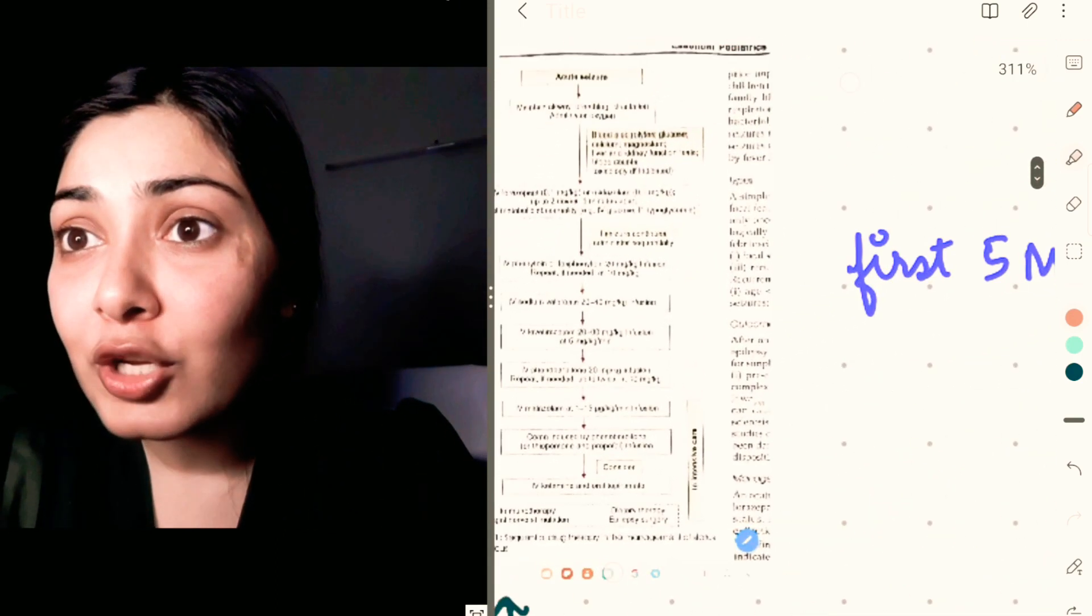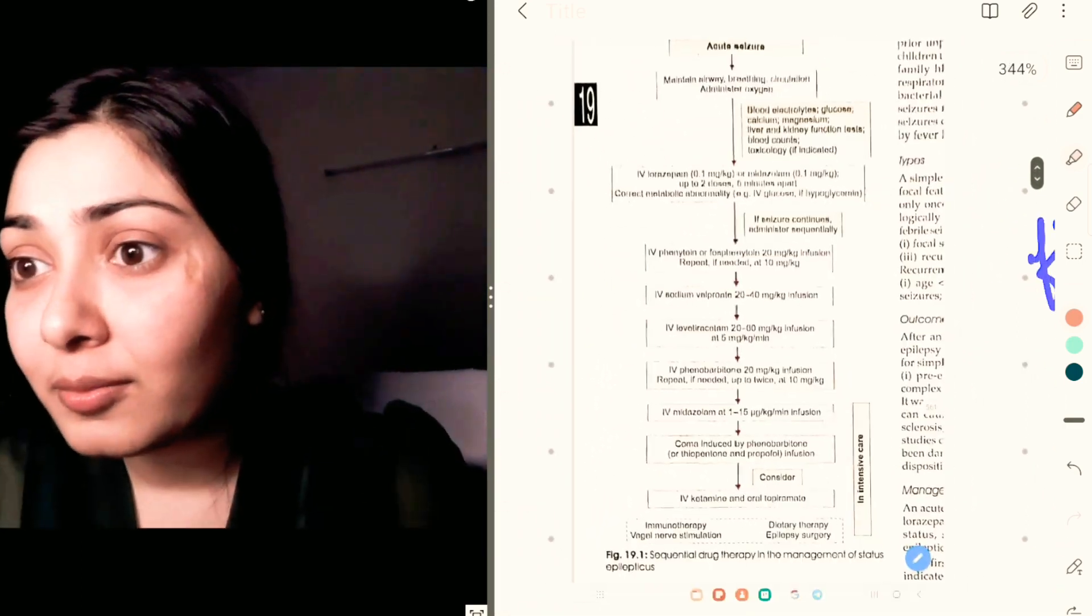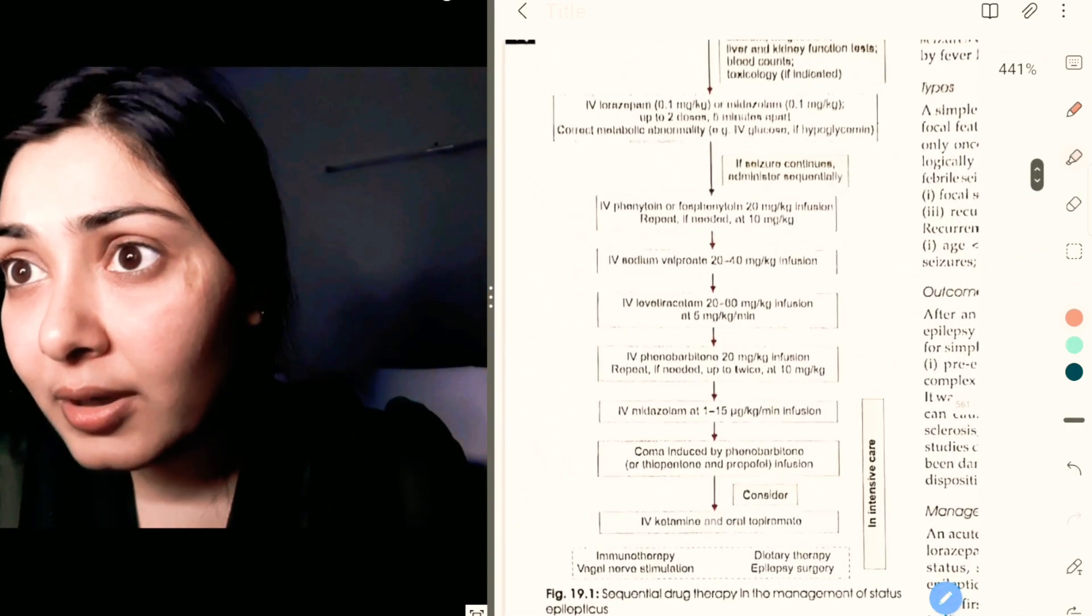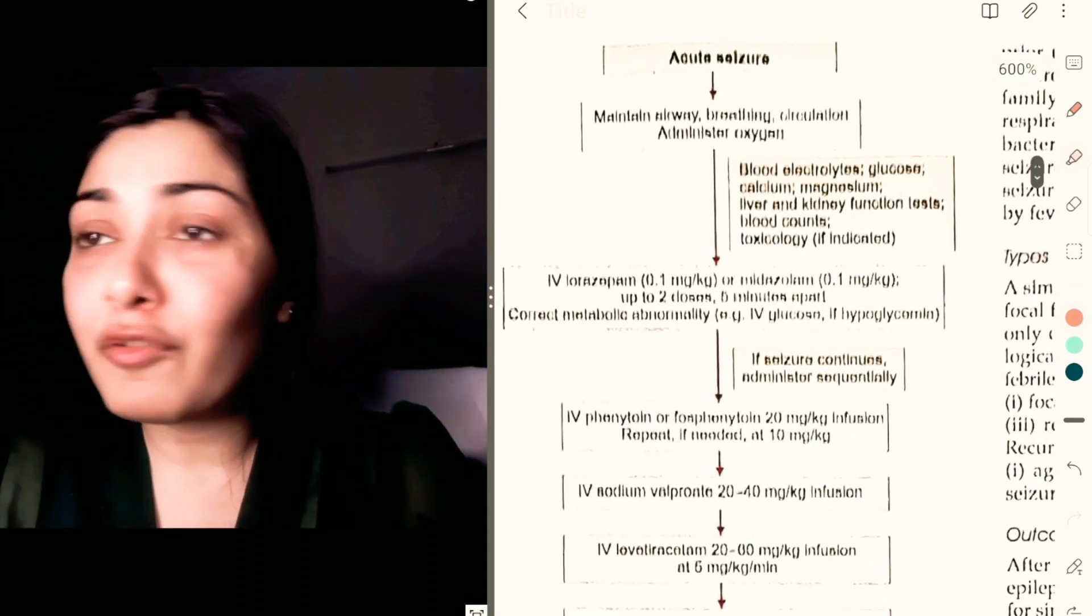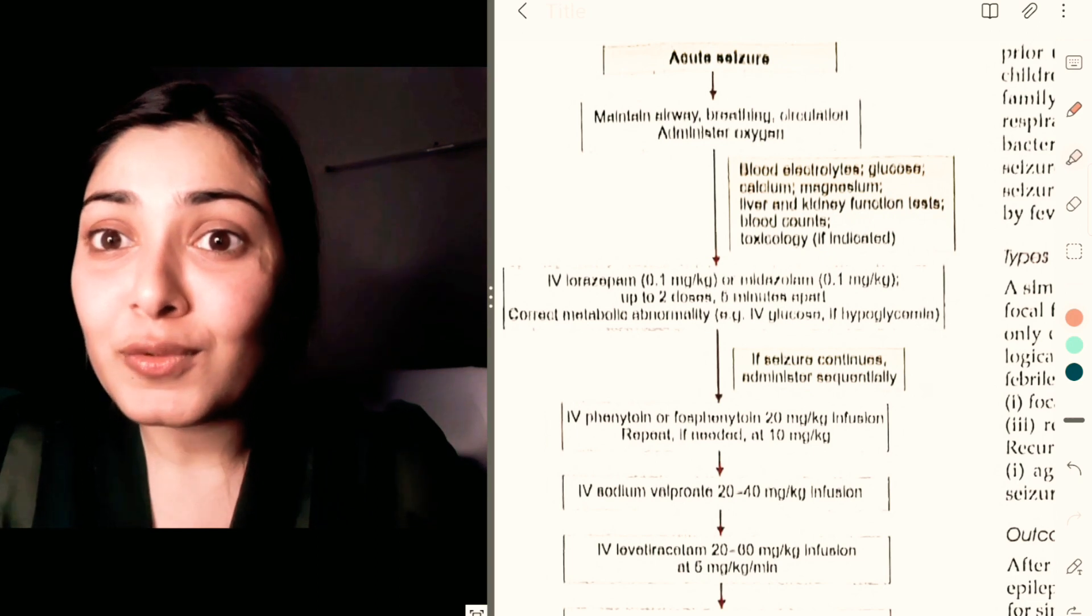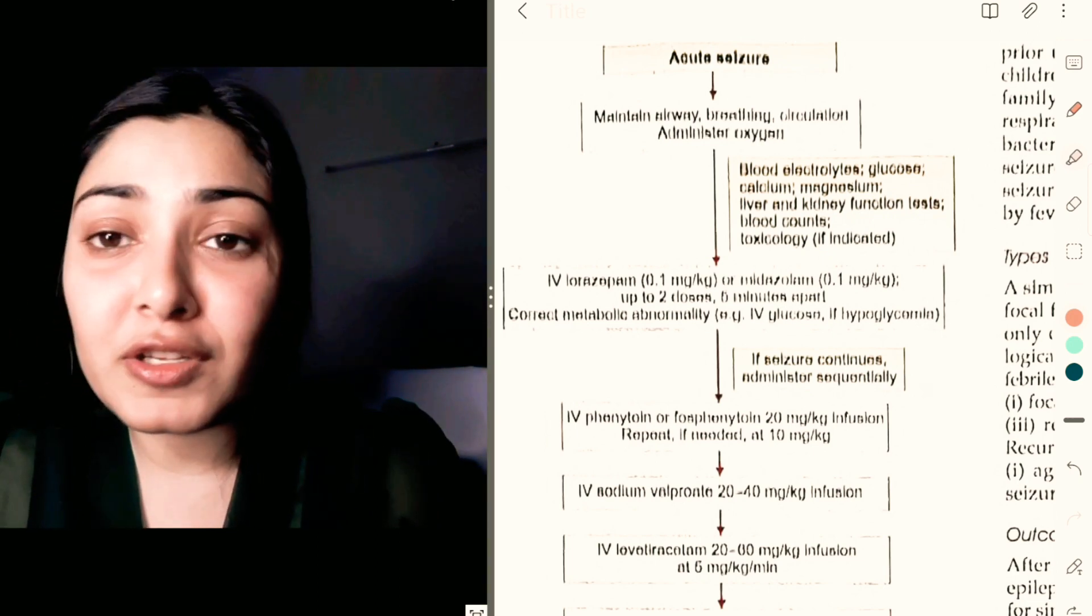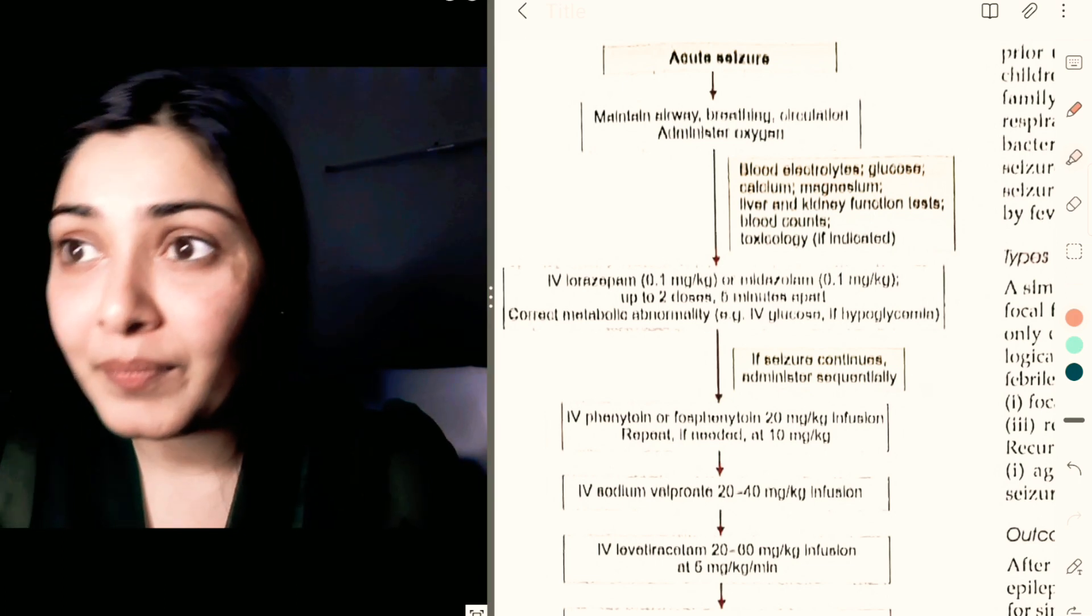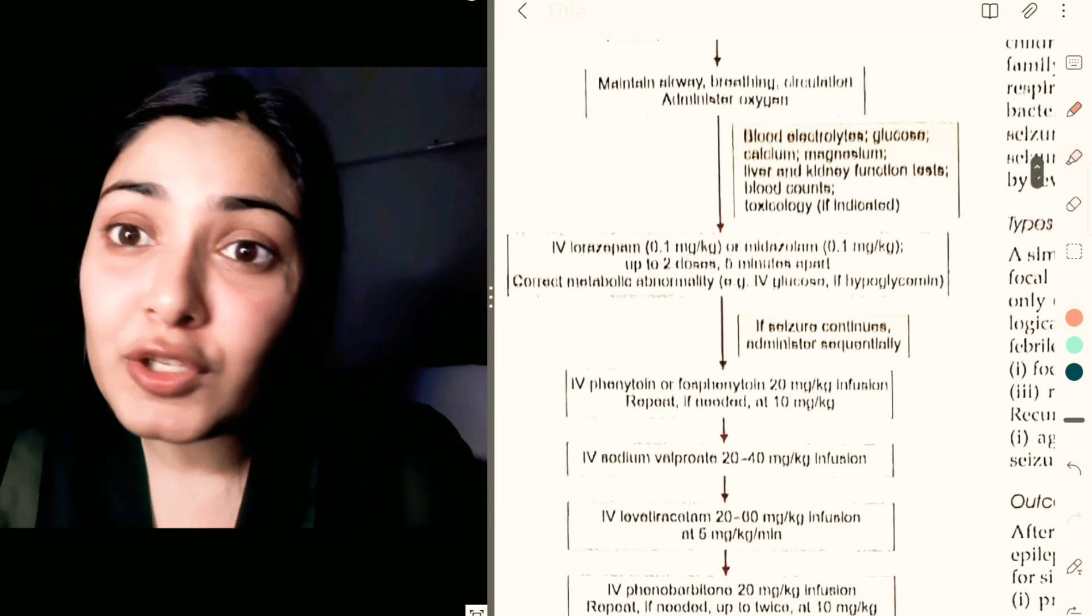Here is a screenshot of your OP Ghai textbook. Whenever there is an acute seizure, as I told you, you have to stabilize the child first—secure the airway, breathing, circulation, and administer oxygen. Then you have to look at what is the cause.